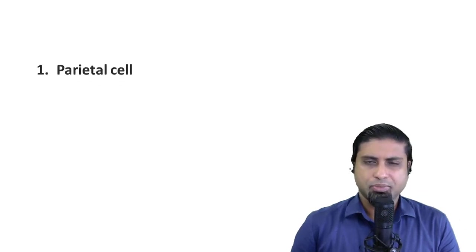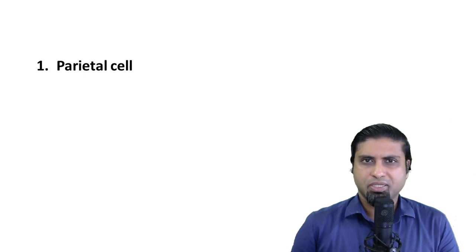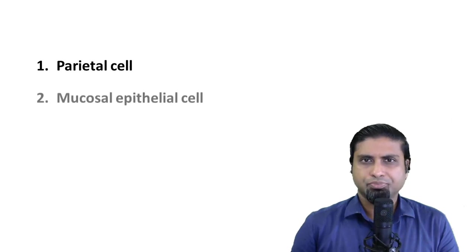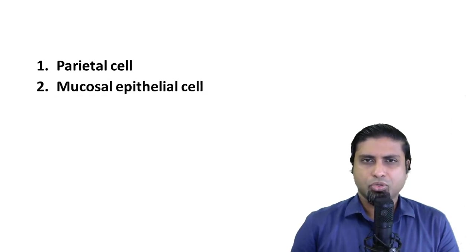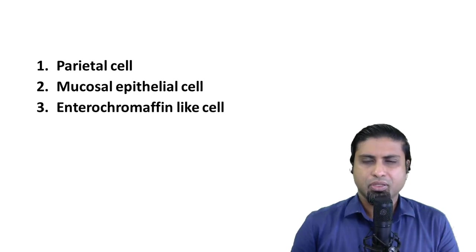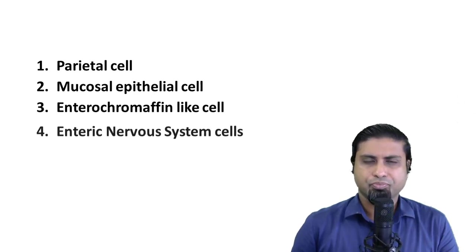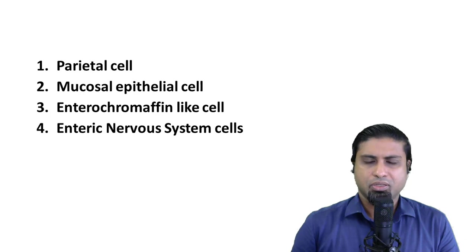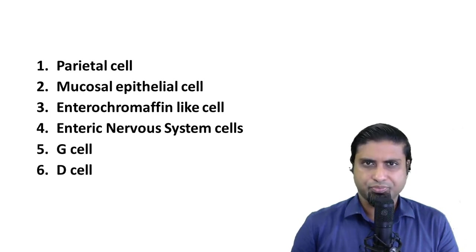These include the parietal cell, the mucosal epithelial cell, the enterochromaffin-like cells, the cells of the enteric nervous system, the G cells and the D cells.